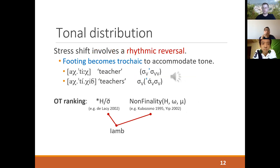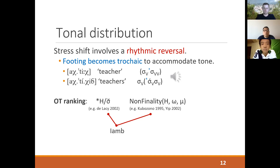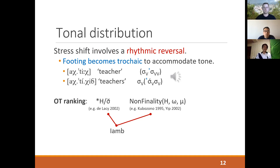For penultimate stress, the analysis we adopted in 2013 was that it involves a flip in the kind of foot rather than a movement in the position of the foot. When you have penultimate accent, you have trochaic footing rather than iambic footing, which gives you stress and tone on the second-to-last syllable. For example, the word for 'teacher' would have an iambic foot and final stress. If we add a plural suffix which introduces tone, we get a prosodic reorganization with tone and stress on the penult, corresponding to trochaic footing.